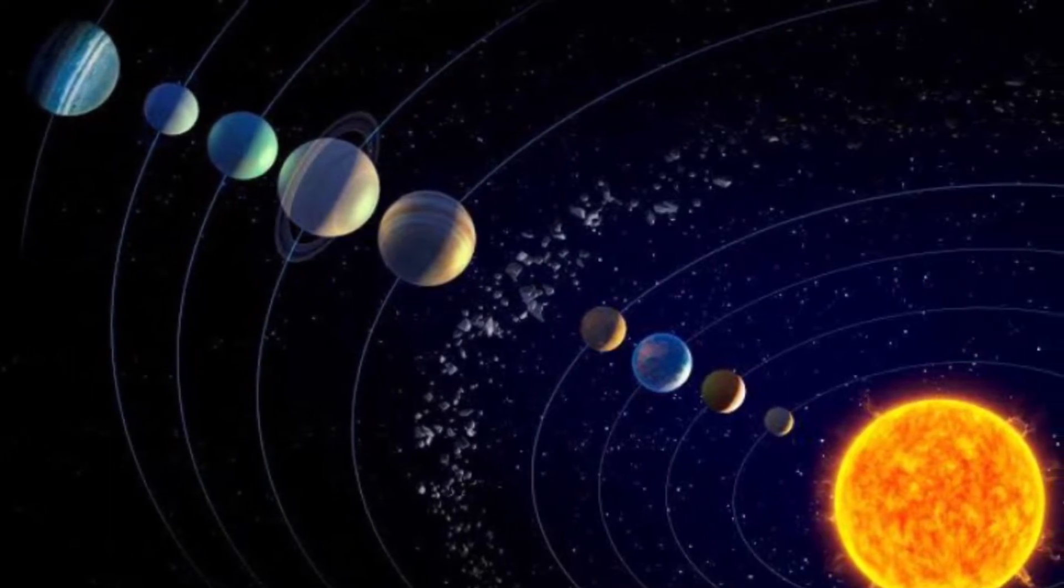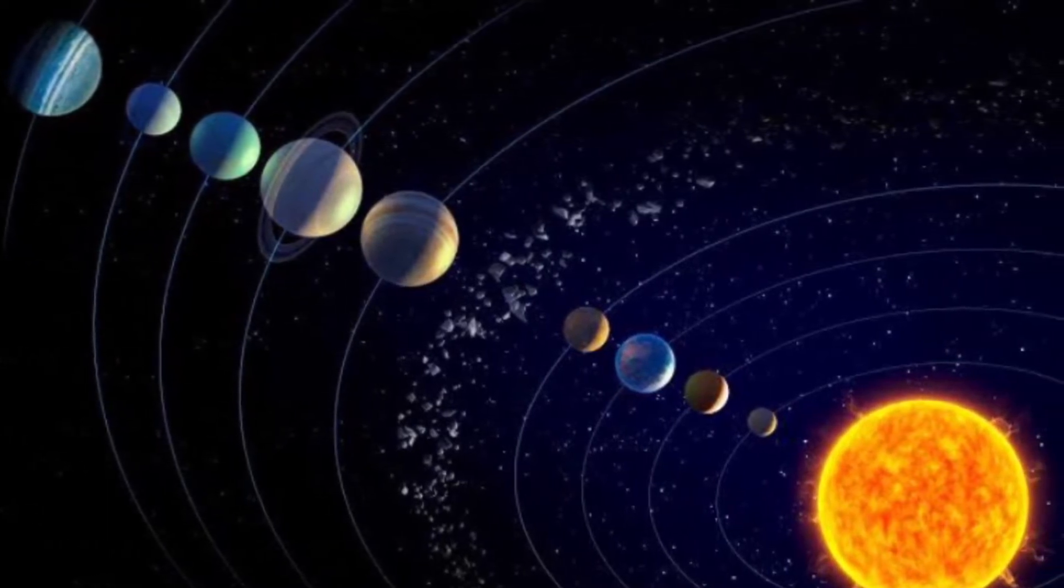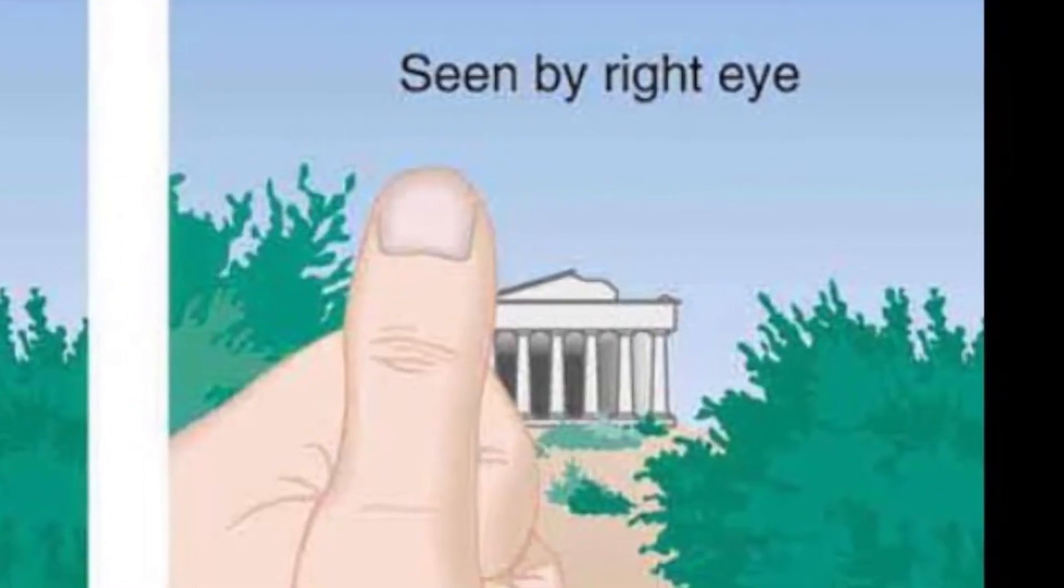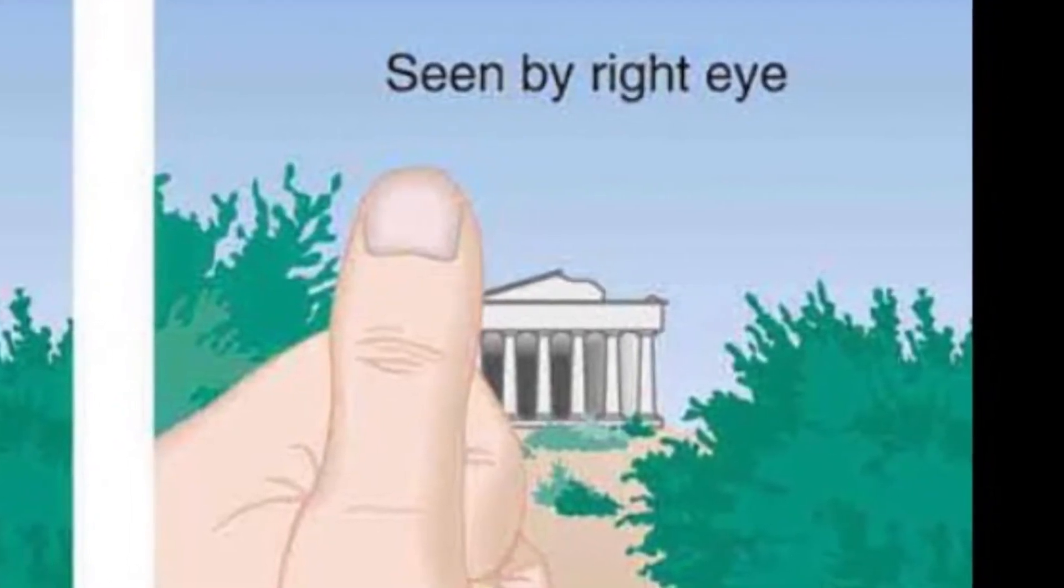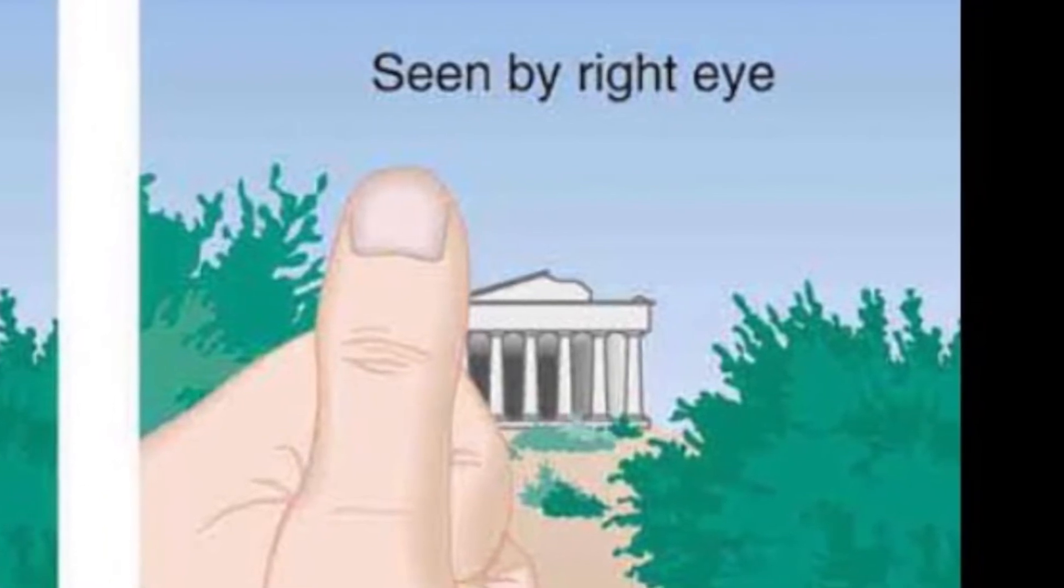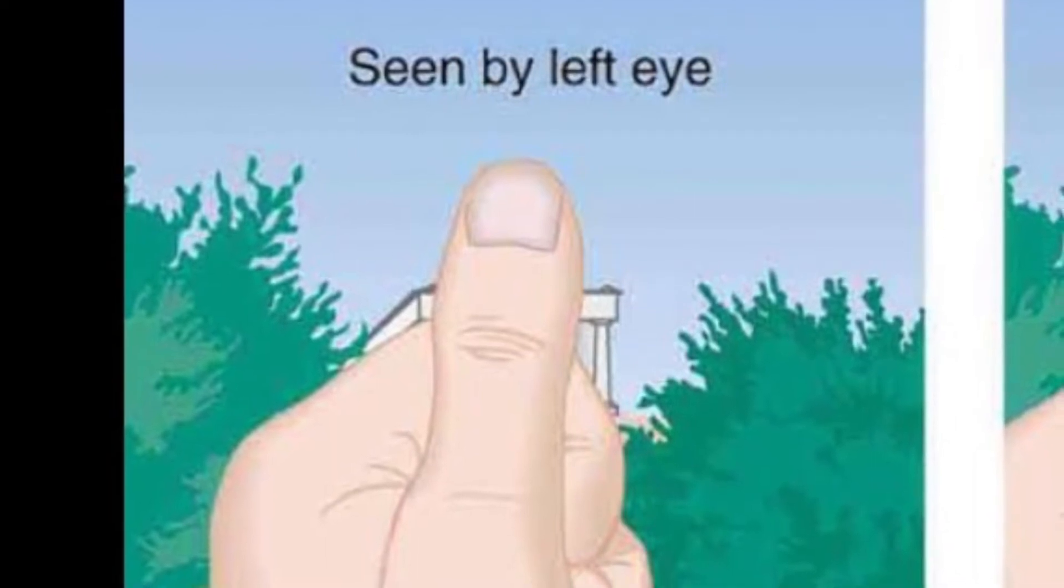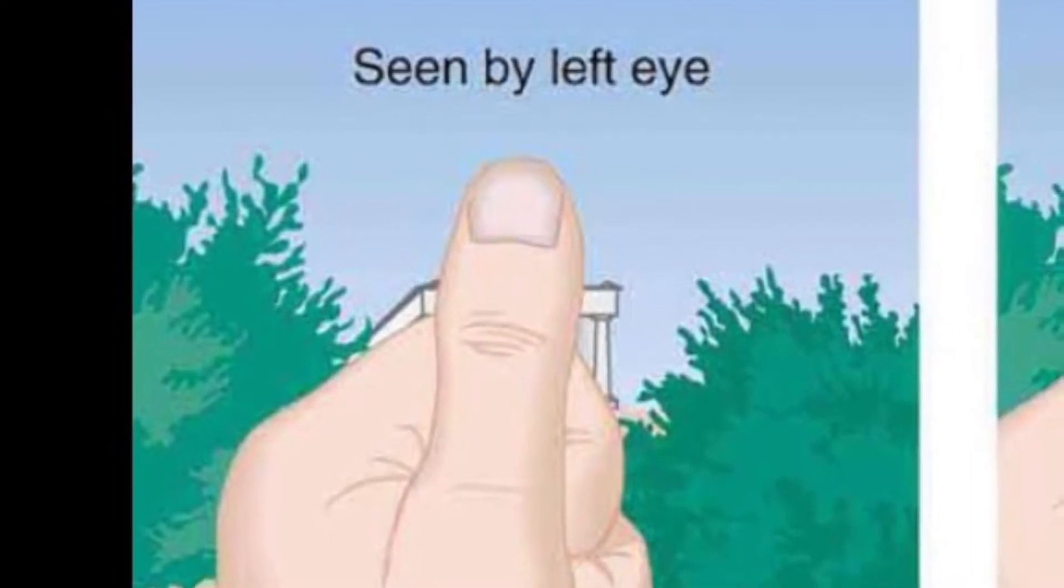Well, there is a very simple trick that we have used to measure large distances. At first, I want you to fix your thumb finger to a particular background and then observe it by closing your left eye. And then open your left eye and observe your thumb again by closing your right eye. You would have noticed a slight change in position of your thumb in respect to its background.